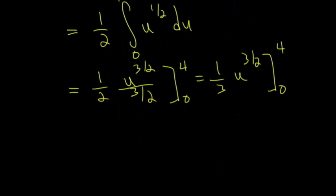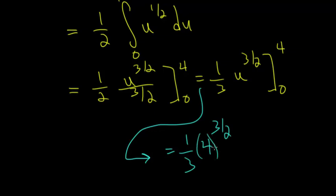At this point, we just have to plug in those two bounds. When we plug in 0, it's equal to 0, so all we have to worry about is when we plug in 4. So we have 1 third times 4 to the 3 halves. Essentially, 4 to the 3 halves means that we have to cube it and then take its square root, or you could do it the reverse, take its square root first and then cube it.